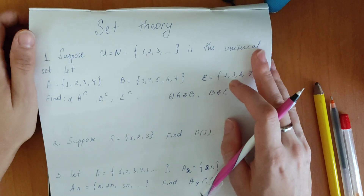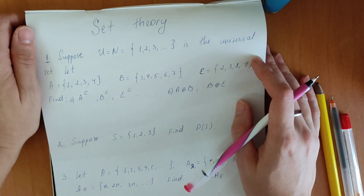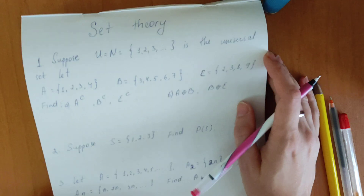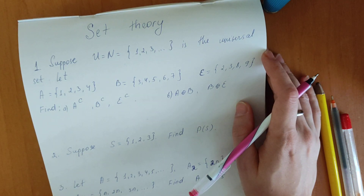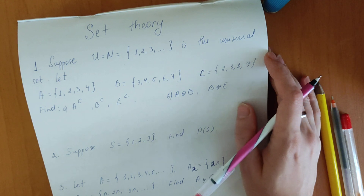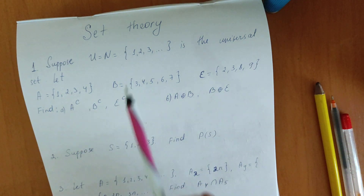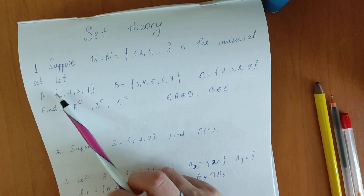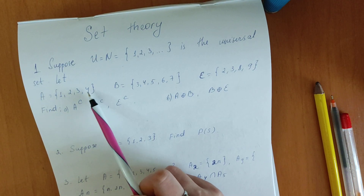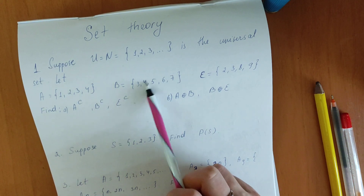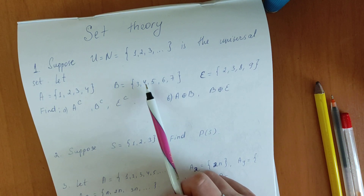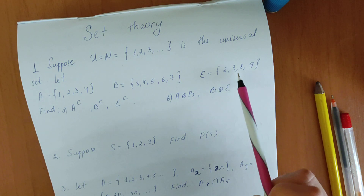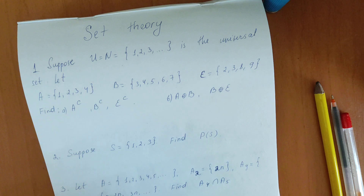Hi friends, welcome again. Today we will solve some set problems. Here is the first one: suppose we have U the universal set, and let A be the set {1, 2, 3, 4}, B be the set consisting of elements {3, 4, 5, 6, 7}, and E be the set consisting of elements {2, 3, 8, 9}.